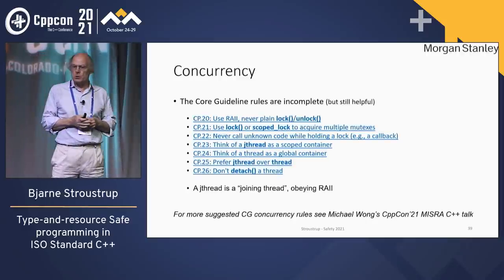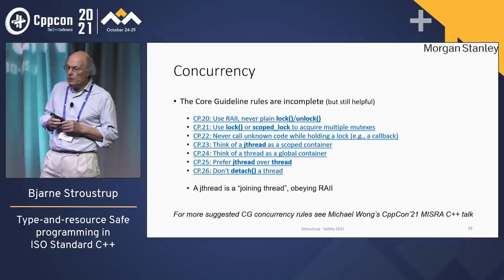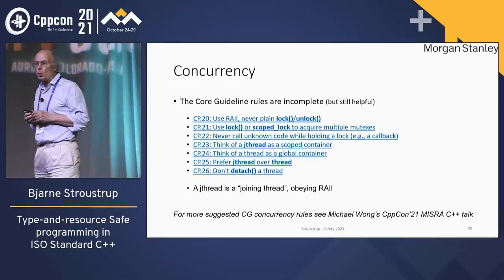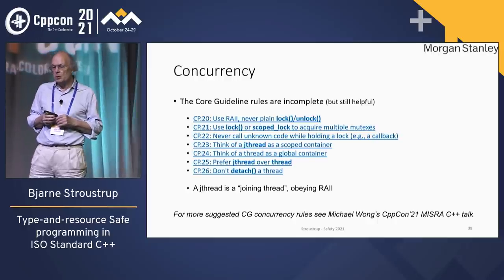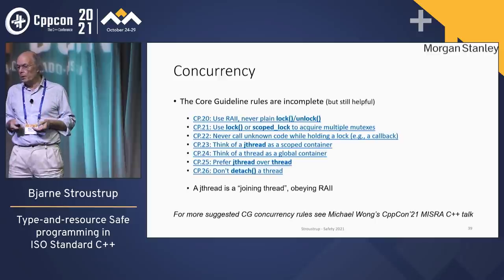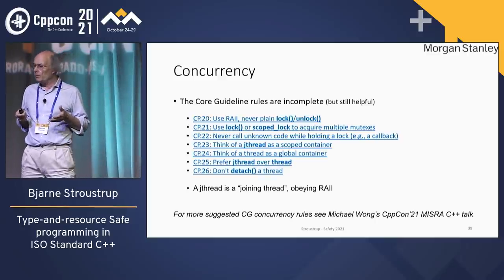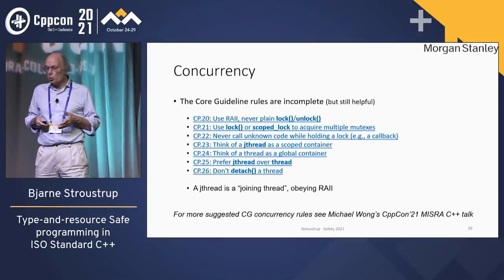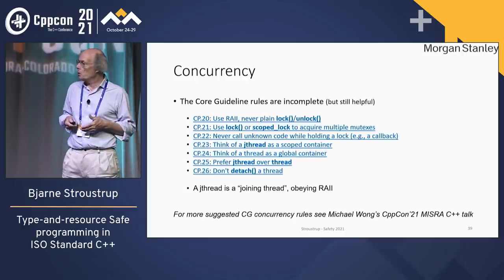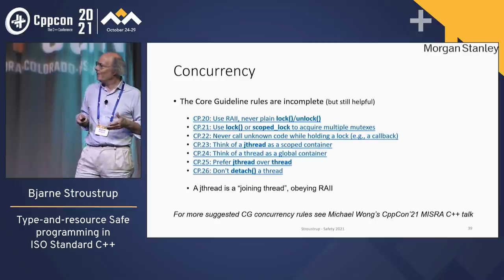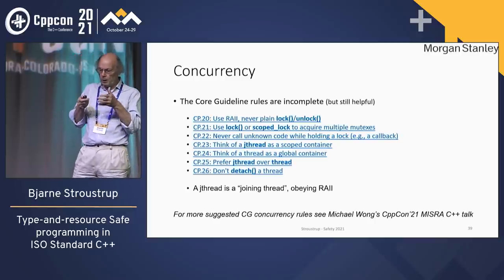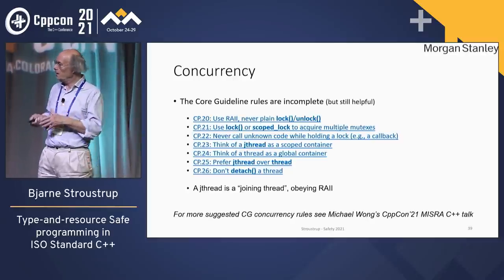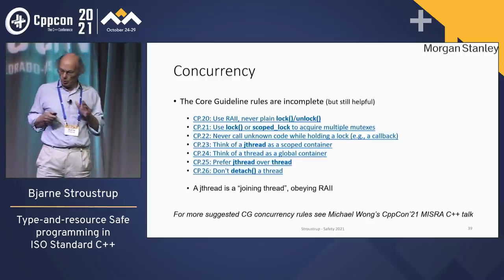Concurrency is a big issue — I said I wouldn't say much about it. The core guidelines does provide a few rules: use RAII, use a scoped lock when you can for acquiring multiple locks, never call unknown code while holding a lock. These are, to the best of my knowledge, not checked very well currently — they are checkable. There's a talk by Mike Wong today about extending the core guidelines to concurrency issues done under the guise of MISRA, so something good might come out of this.